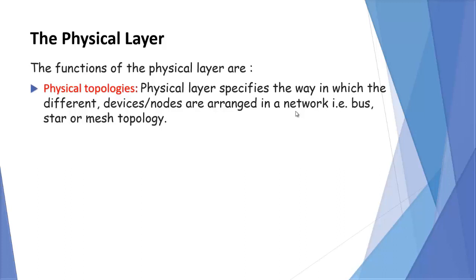Physical layer defines the physical topology — the way in which different devices or nodes are arranged in a network. For example, it may be bus, star, or mesh topology.